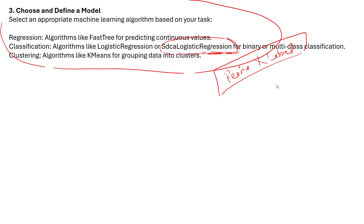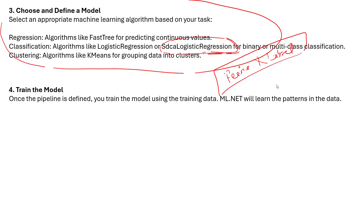The third step is choosing and defining a model — selecting an appropriate algorithm based on your task. Options include regression algorithms like FastTree for predicting continuous values, classification algorithms like logistic regression or SDCA for binary and multi-class classification, and clustering algorithms like K-Means for grouping data into clusters.